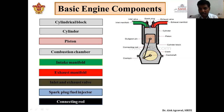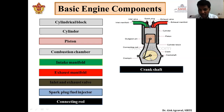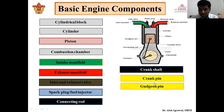Next is the connecting rod. This rod connects the piston with the crankshaft. It is used to convert the reciprocating motion of the piston to the rotary motion of the crankshaft. Next is the crankshaft — the crank and crankshaft combination — where the reciprocating motion of the piston via the connecting rod is converted into rotary motion. The pin which connects the crank to the connecting rod is called the crank pin. The pin which connects the connecting rod to the piston is called the gudgeon pin.